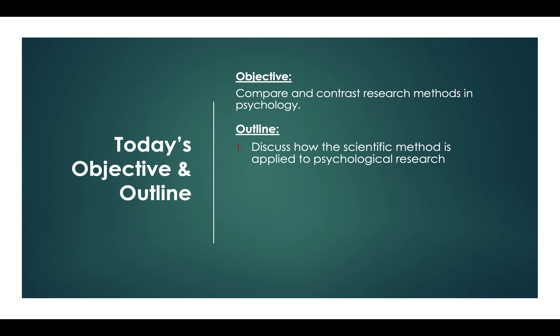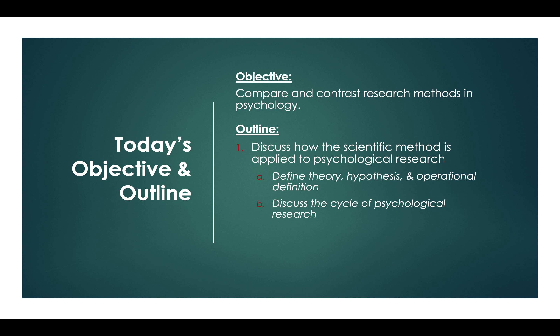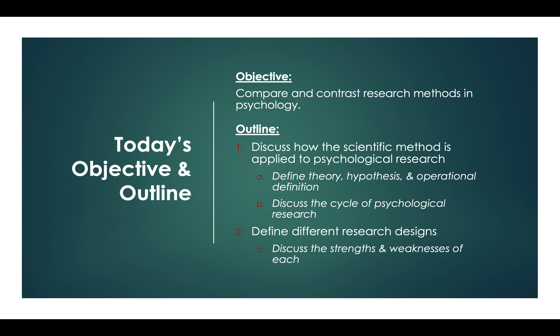For our outline, we are going to start off by discussing how the scientific method is applied to psychological research. We are going to define the terms theory, hypothesis, and operational definition. We are going to discuss the cycle of psychological research, and then we are going to define different research designs and talk about the strengths and weaknesses of each design.